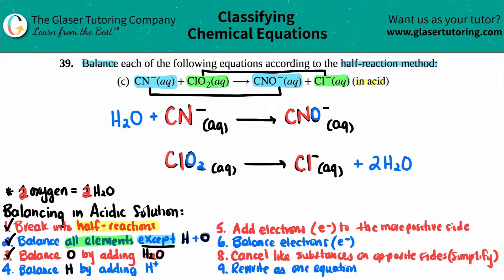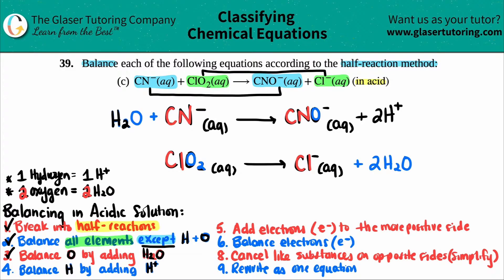Step four: balance hydrogen by adding H⁺. If you need one hydrogen, add one H⁺ — don't forget that plus charge. For the top reaction, I have two hydrogens from H₂O on the right, so I add two H⁺ to the left. For the bottom, I have two H₂Os multiplied by two, giving four hydrogens, so I add four H⁺ to the left side. That step is now balanced.